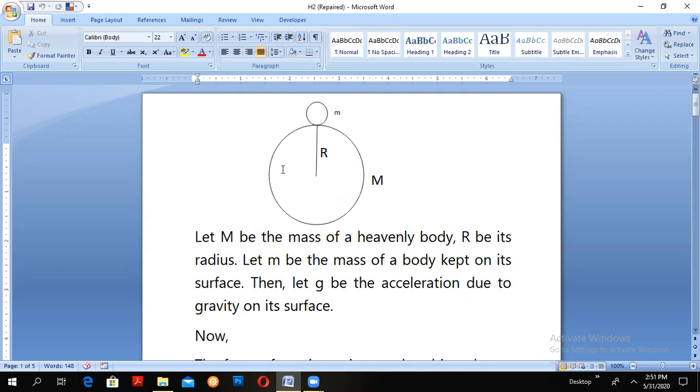Suppose this big sphere be a heavenly body with mass M and R be its radius. Now this small sphere is any object with mass small m.